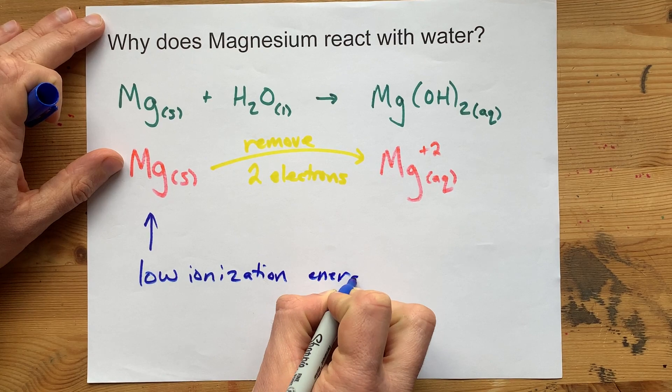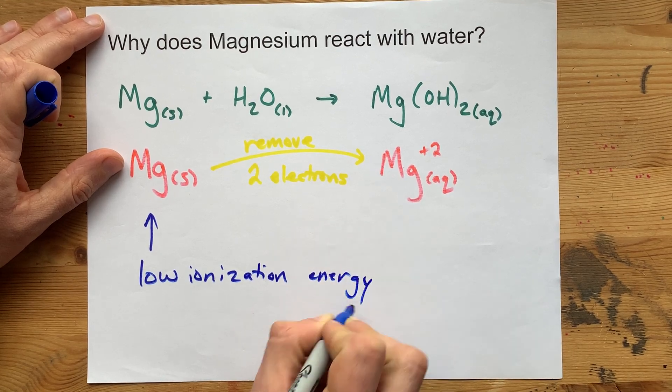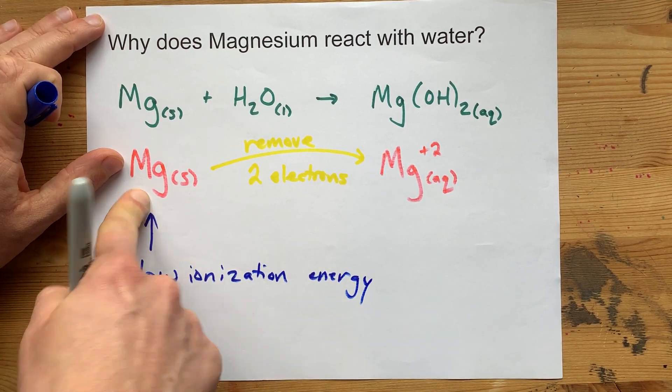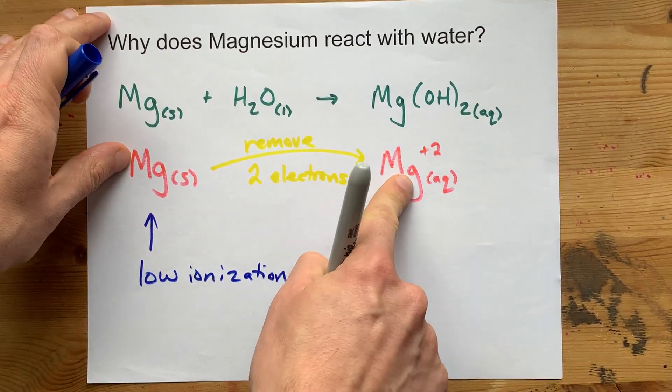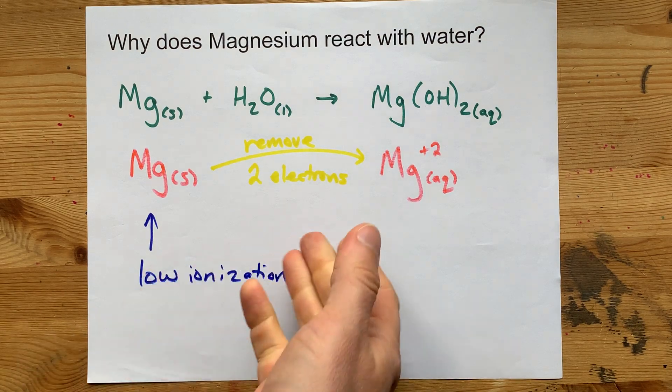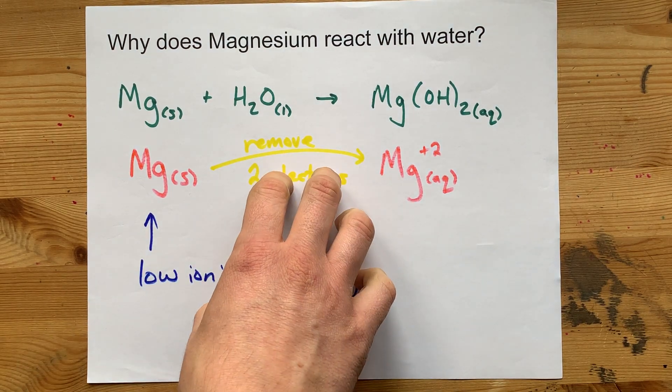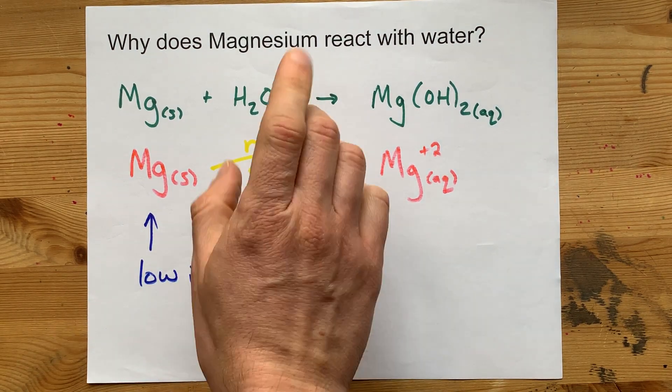Magnesium is willing to give up its electrons to become a +2 ion. Very nice. Thanks for being with me.